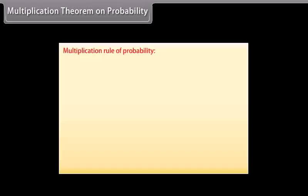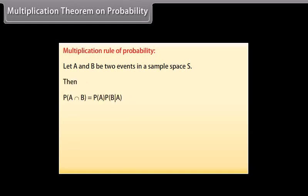Multiplication Theorem on Probability. Multiplication rule of probability: Let A and B be two events in a sample space S. Then P(A ∩ B) = P(A) × P(B|A) = P(B) × P(A|B), provided P(A) ≠ 0 and P(B) ≠ 0.